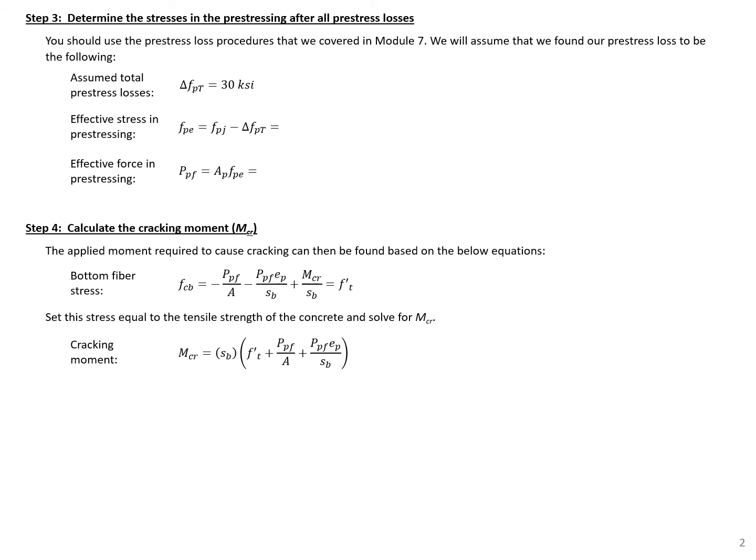Our next step is to determine the stresses in the pre-stressing after all pre-stress losses. So we're using essentially something similar to the force and the tendon approach, where we're assuming the pre-stressing is applied to our section as a force. So we need to take off all of our pre-stress losses. We're not going to do this here. If you want more details on how to calculate pre-stress losses, you can look at some of our examples from module 7. But here we're just going to assume that we have a total pre-stress loss. So our elastic shortening loss, creep loss, shrinkage, and relaxation loss are going to be equal to 30 ksi.